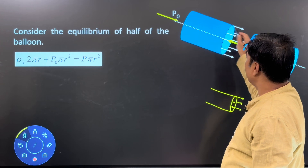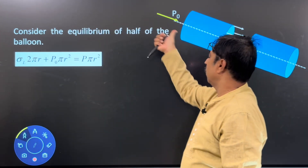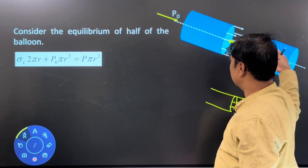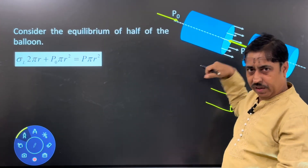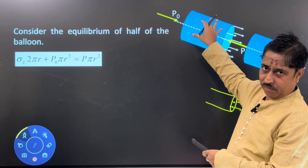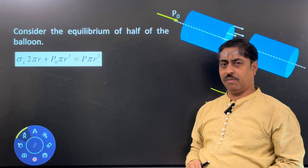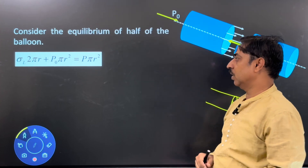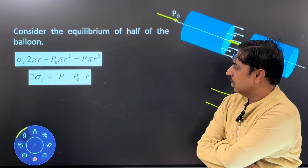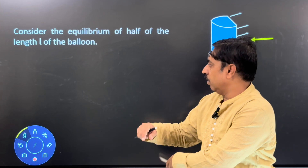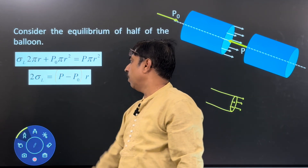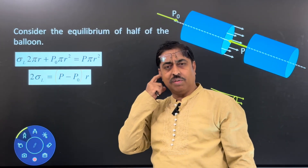So I have written: σ_L times 2πr (surface tension force) plus P_naught times πr² (external pressure force) equals P times πr² (force by internal air). Cancelling common terms, you get σ_L equals (P minus P_naught) times r divided by 2. Here σ_L stands for longitudinal surface tension.